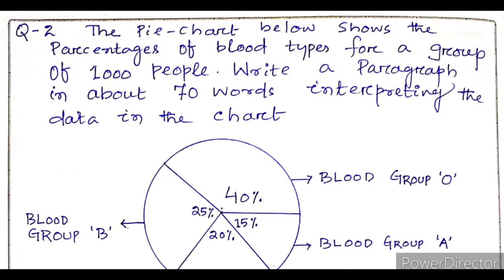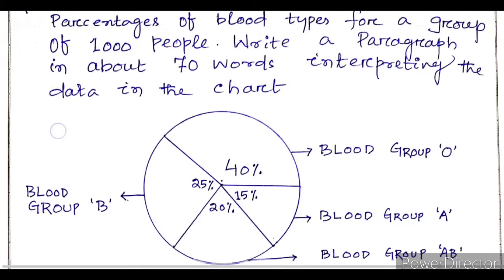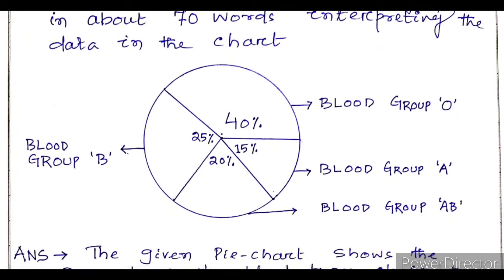Now let us look at question number 2, another pie chart example. Question 2 is: 'The pie chart below shows the percentages of blood types for a group of 1000 people. Write a paragraph in about 70 words interpreting the data in the chart.' This pie chart shows the blood types of 1000 people — whose blood group is what among those 1000 people.